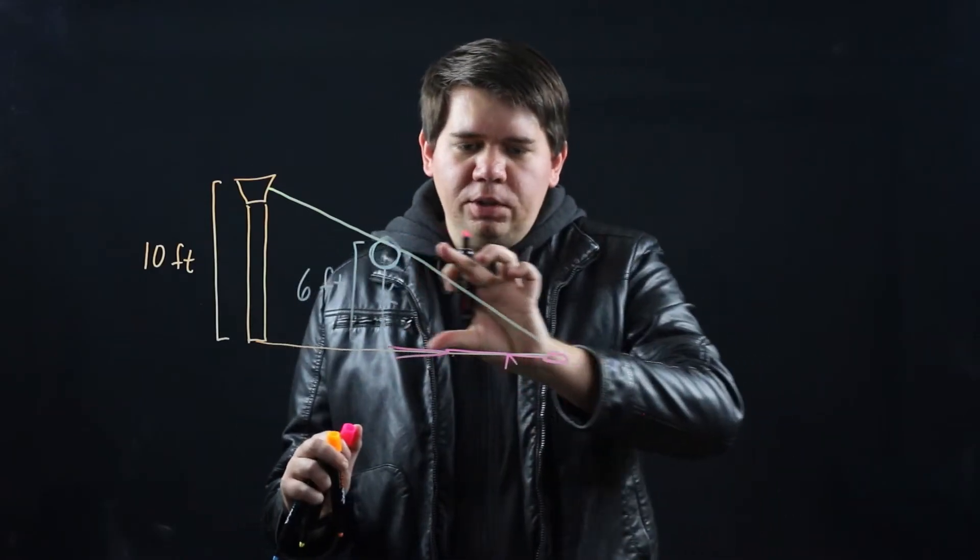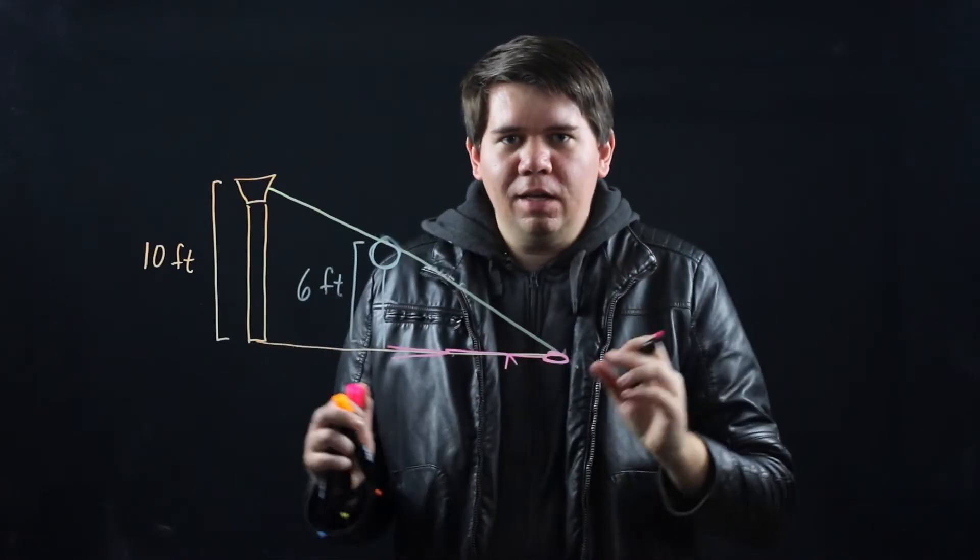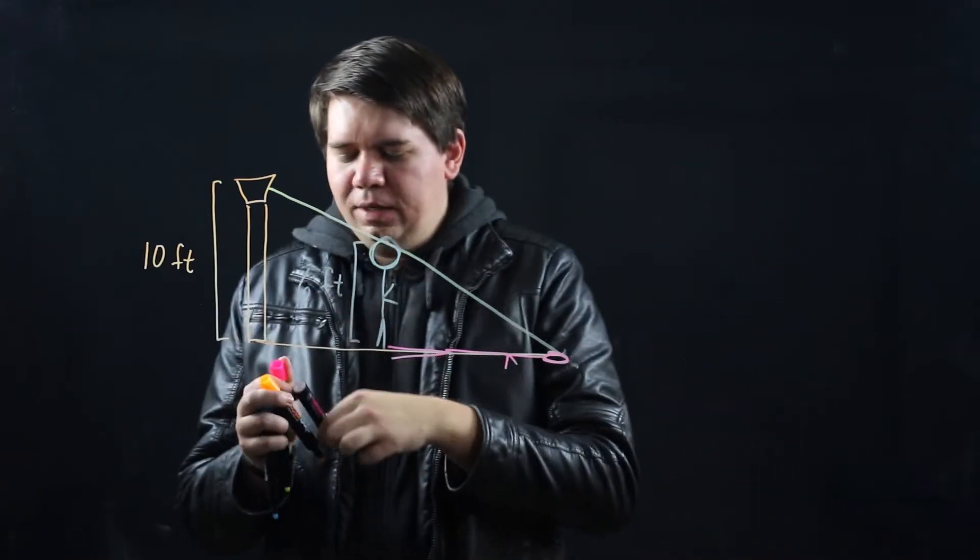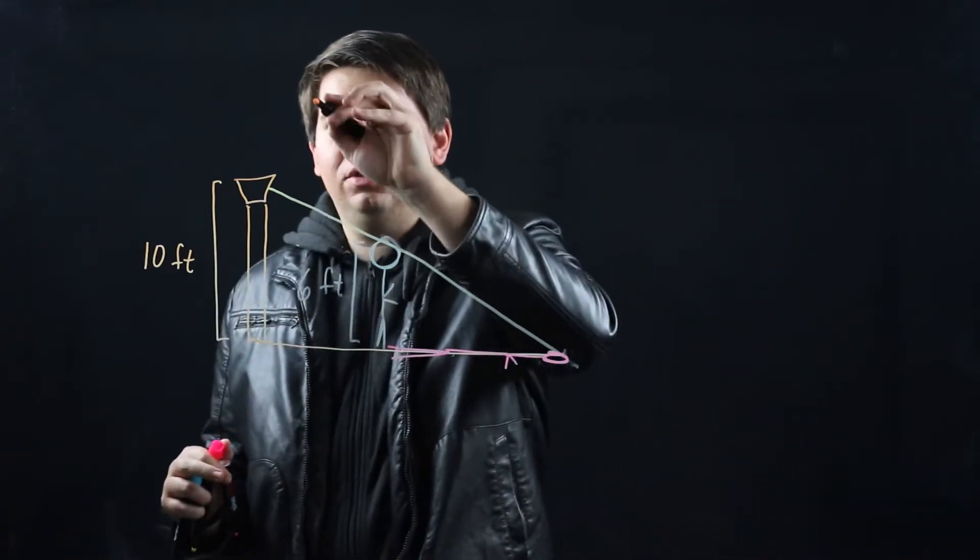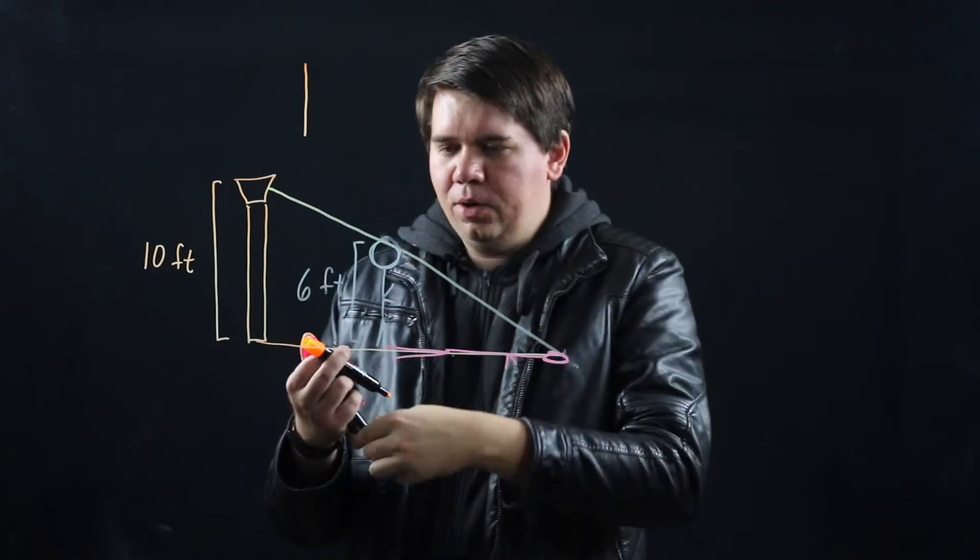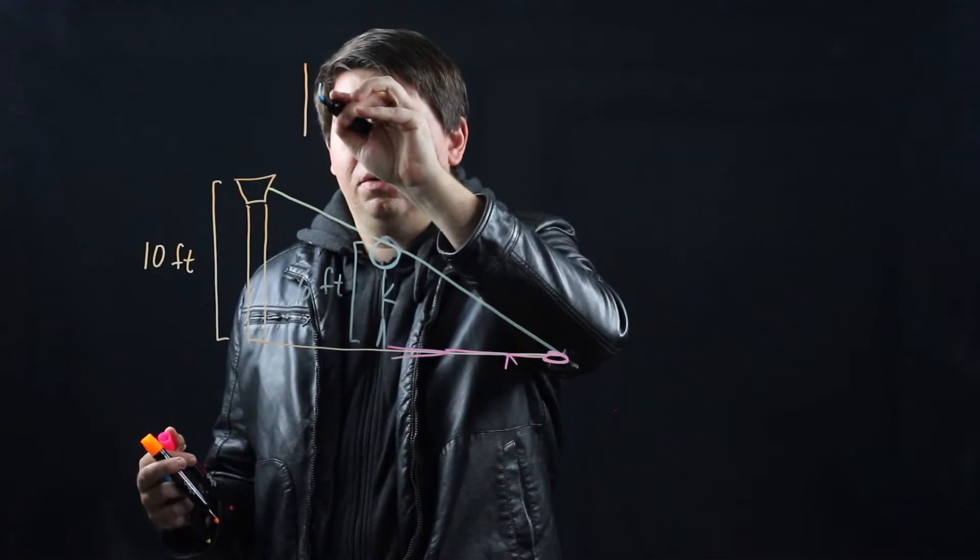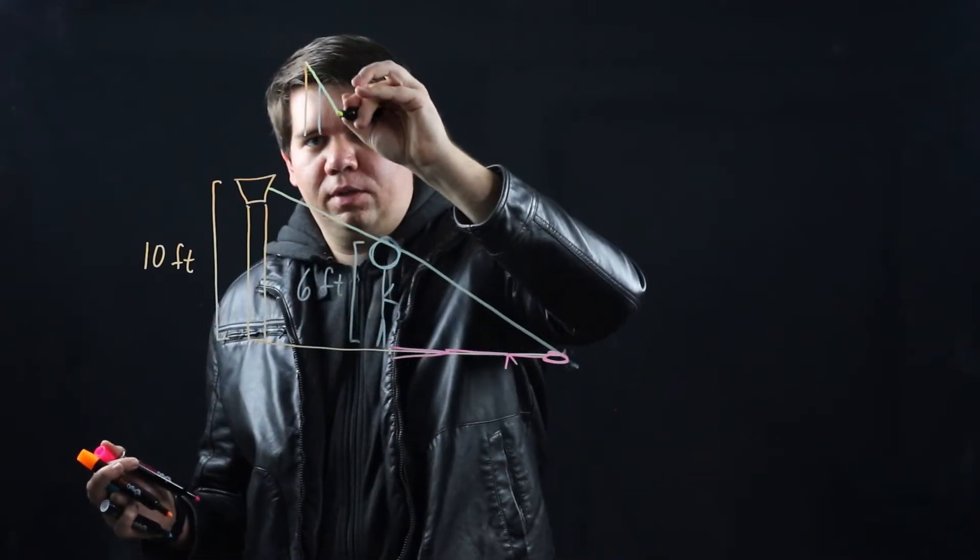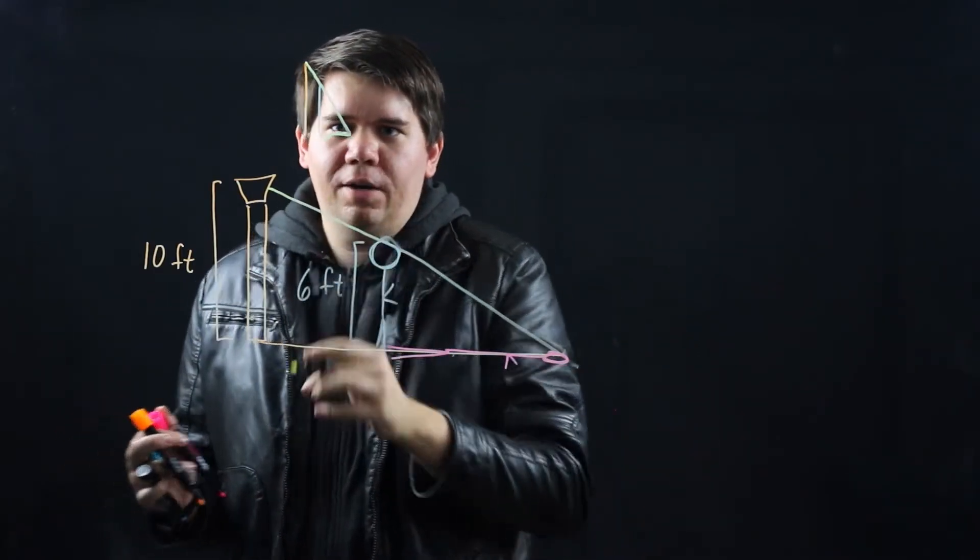Now as the person walks you might imagine that the shadow will change. If the person is standing really close to the lamppost, then your shadow actually isn't that big when you're very close to the lamppost. Here would be your shadow.